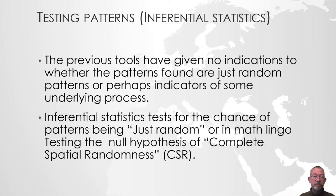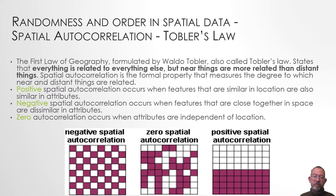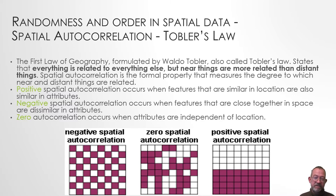That's the basic null hypothesis that all of these tests we'll be talking about use. Spatial randomness really relates to the other term of geography, namely autocorrelation, or spatial autocorrelation. There is what is commonly known as the first law of geography, or Tobler's law of geography: everything is related to everything else, but near things are more related than distant things. That's what we call a positive spatial autocorrelation.